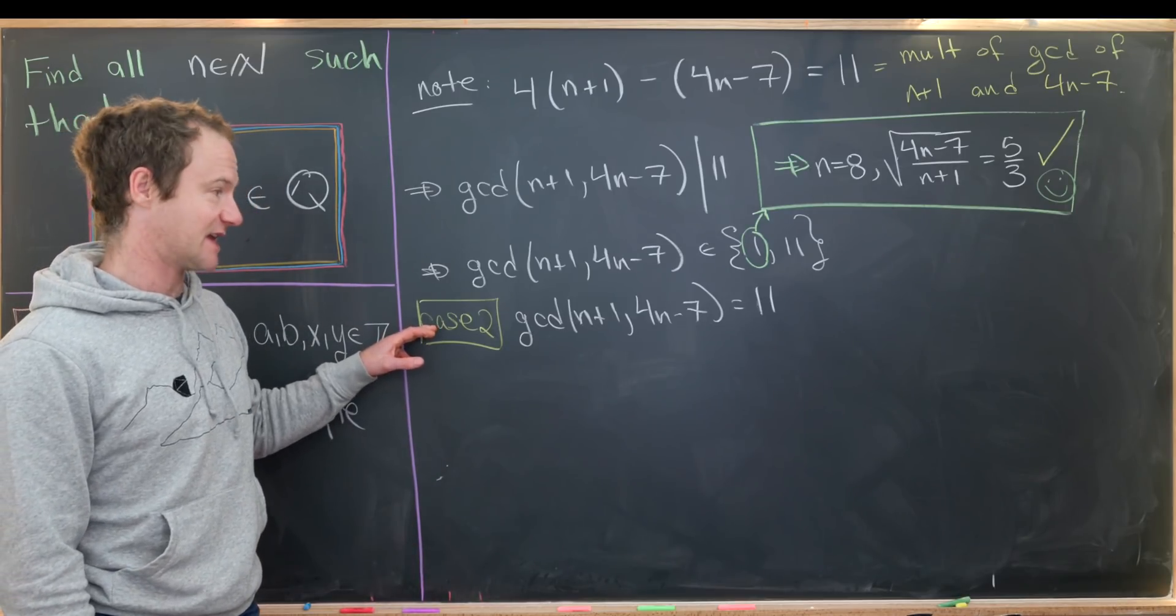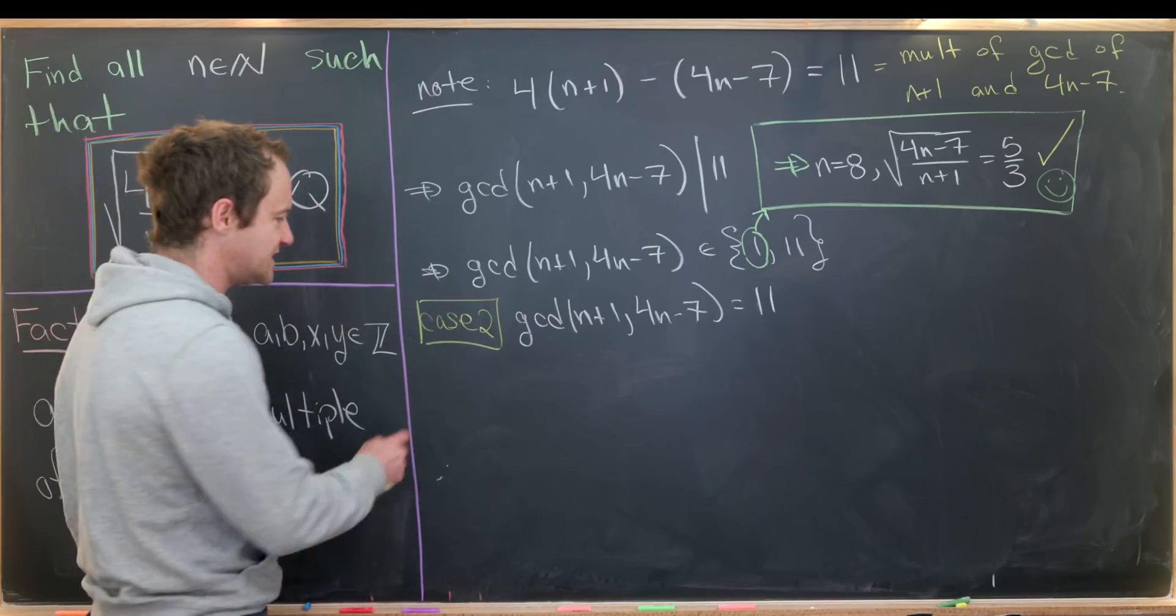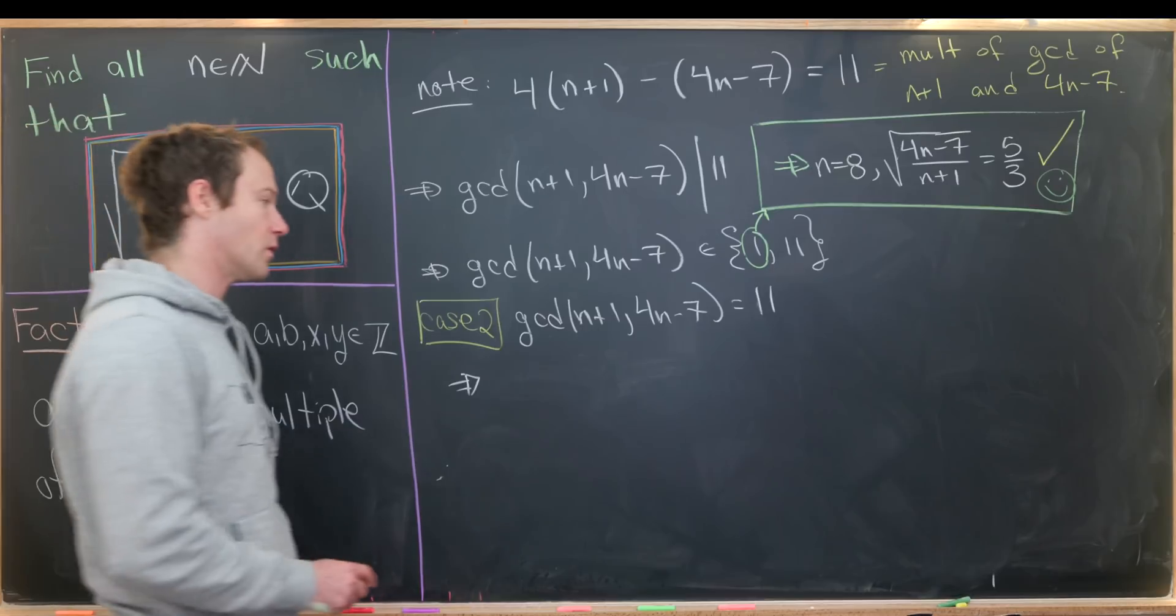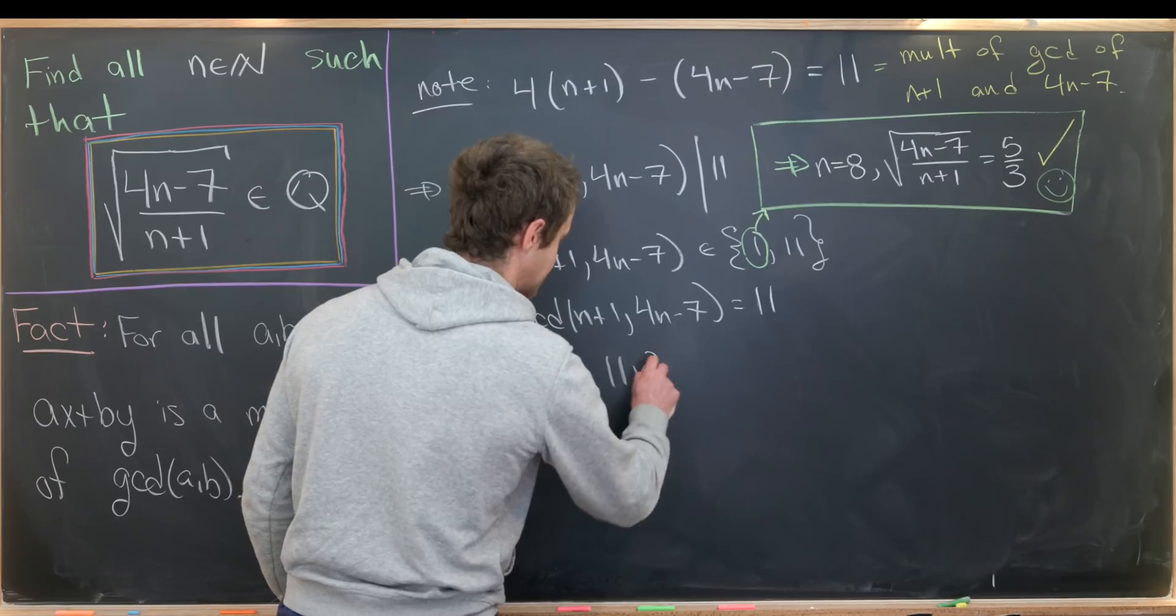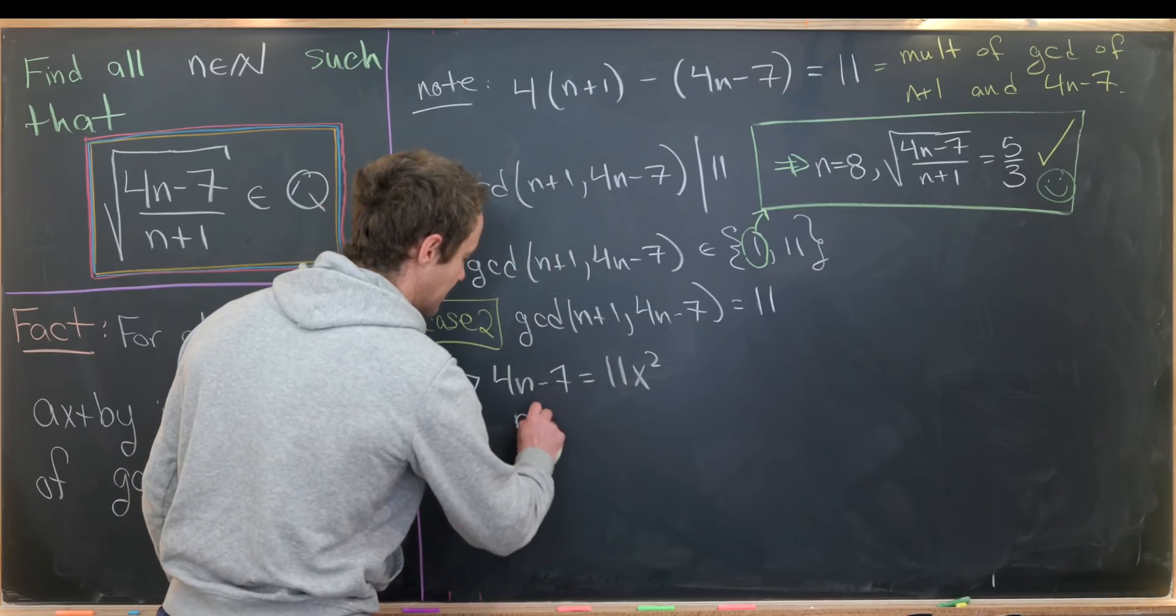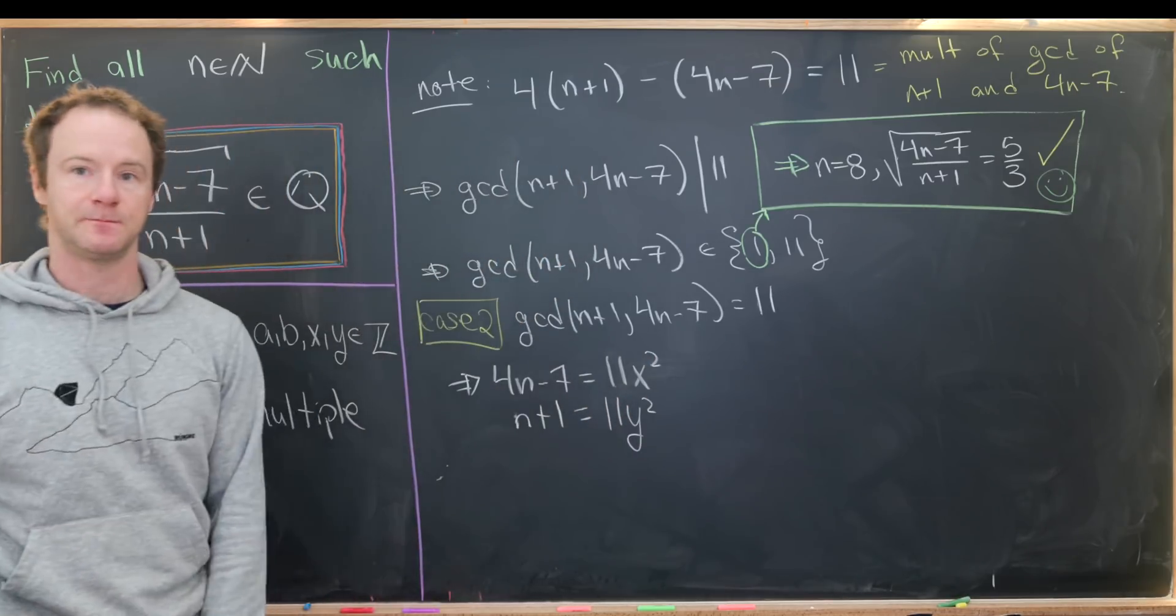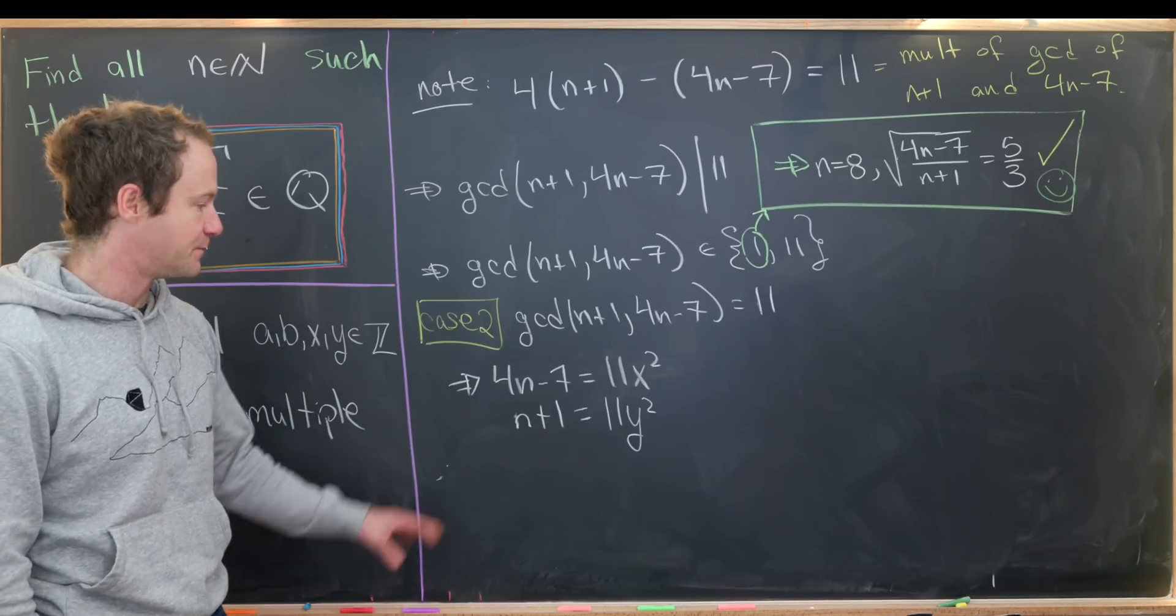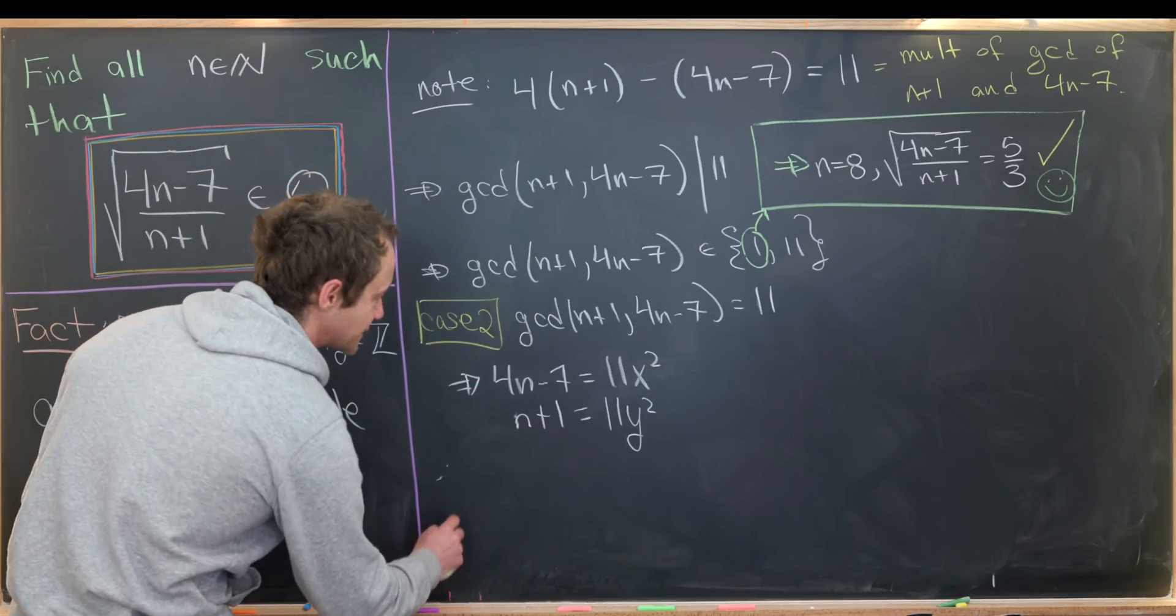Now we're ready to look at this second case where the gcd is 11. So if the gcd is 11, following a similar strategy to what we did before, we can write 4n-7 as 11x² and then n+1 as 11y², and that's of course where x and y are relatively prime. But now we can take this and plug it up into this equation, and that'll leave us with something like 44y² - 11x² = 11.